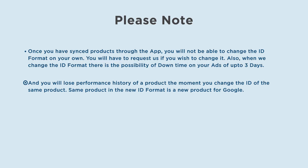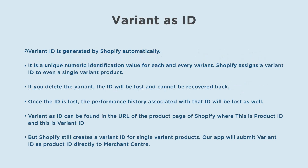The same product in the new ID format is treated as a new product by Google. Variant ID is generated by Shopify automatically — it is a unique numeric identification value for each and every variant. Shopify assigns a variant ID even to a single-variant product. If you delete the variant, the ID will be lost and cannot be recovered, and the performance history associated with that ID will be lost as well.